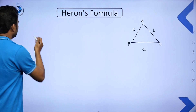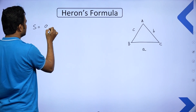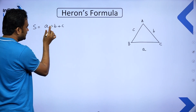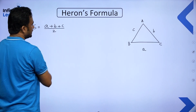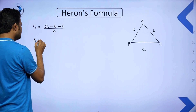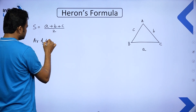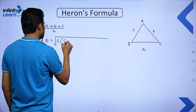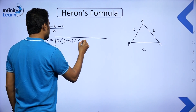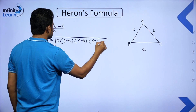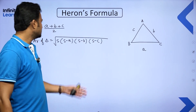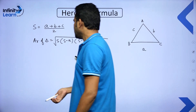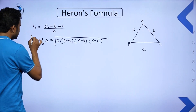First we find the semi-perimeter, which is half of the perimeter. The perimeter is the sum of all sides: A plus B plus C, divided by 2 — this is the semi-perimeter S. The area of the triangle is then the square root of S times (S minus A) times (S minus B) times (S minus C). This is Heron's formula, and we will see its proof in this session.